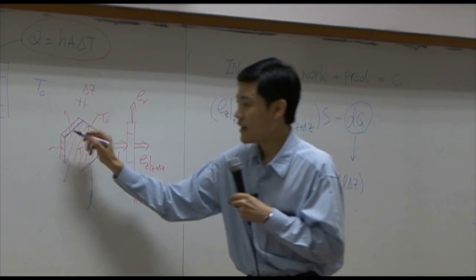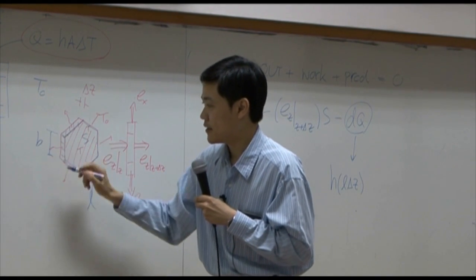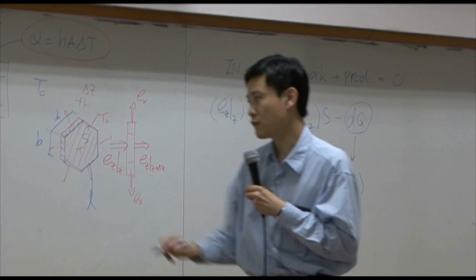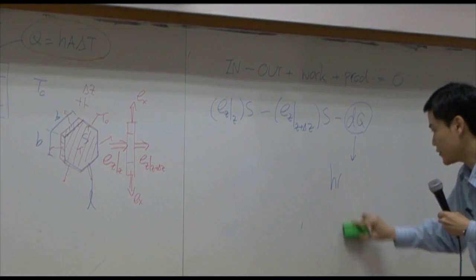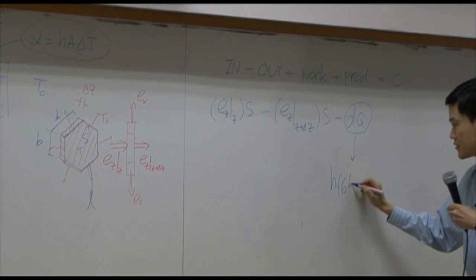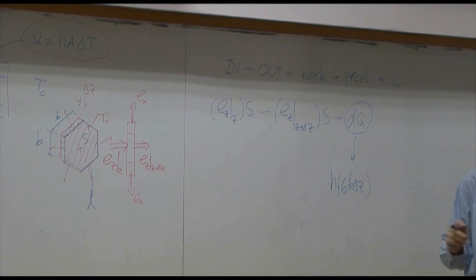Or if you say, if the length here is B, this is B as well, then you have 6B delta Z. That's the area for heat transfer due to Newton's law cooling.